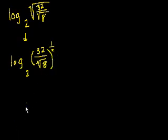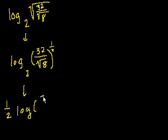And we know from our logarithm properties, the third one we learned, that that is the same thing as 1 half times the logarithm of 32 divided by the square root of 8, right? I just took the exponent and made that the coefficient on the entire thing. And we learned that at the beginning of this video.